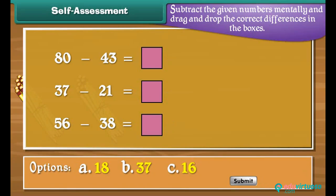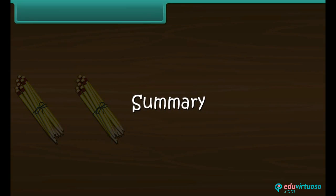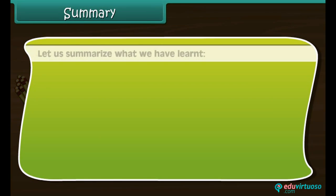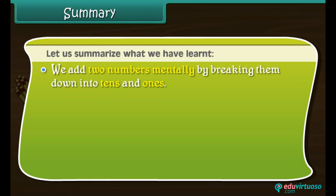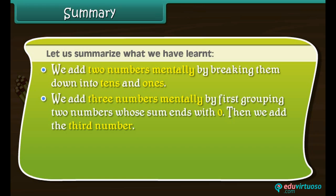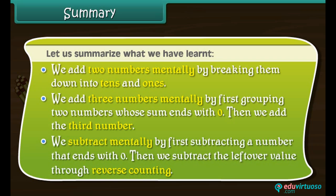Self-assessment: Subtract the given numbers mentally and drag and drop the correct differences in the boxes. Summary: We add 2 numbers mentally by breaking them into tens and ones. We add 3 numbers mentally by first grouping 2 numbers whose sum ends with 0, then adding the third. We subtract mentally by first subtracting a number that ends with 0, then subtracting the leftover value through reverse counting.